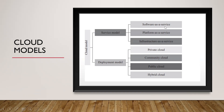Software as a service in short is called SaaS. Platform as a service in short is called PaaS. Infrastructure as a service in short is called IaaS. The deployment model is further divided into private cloud, community cloud, public cloud, and hybrid cloud.